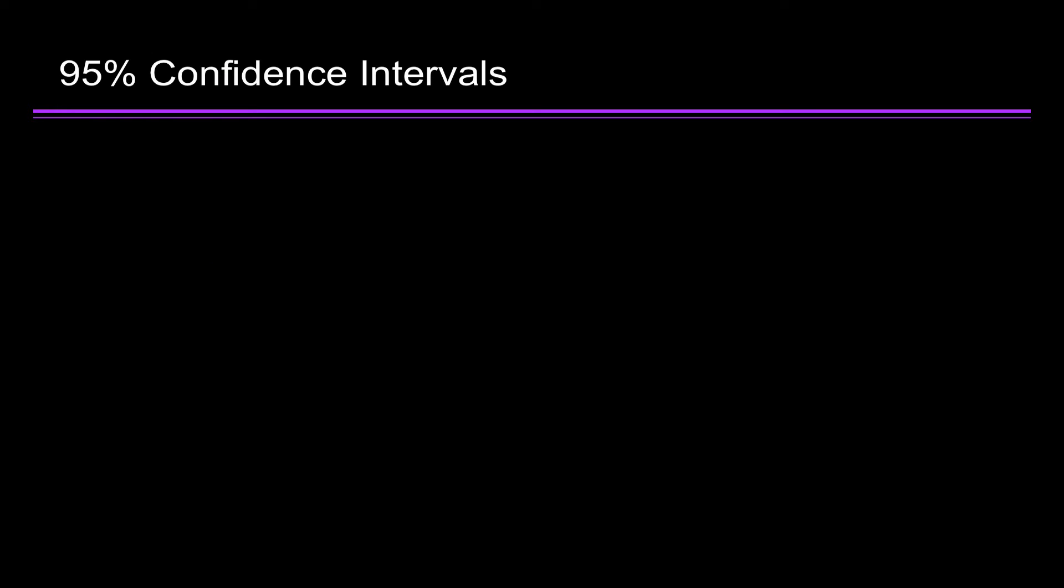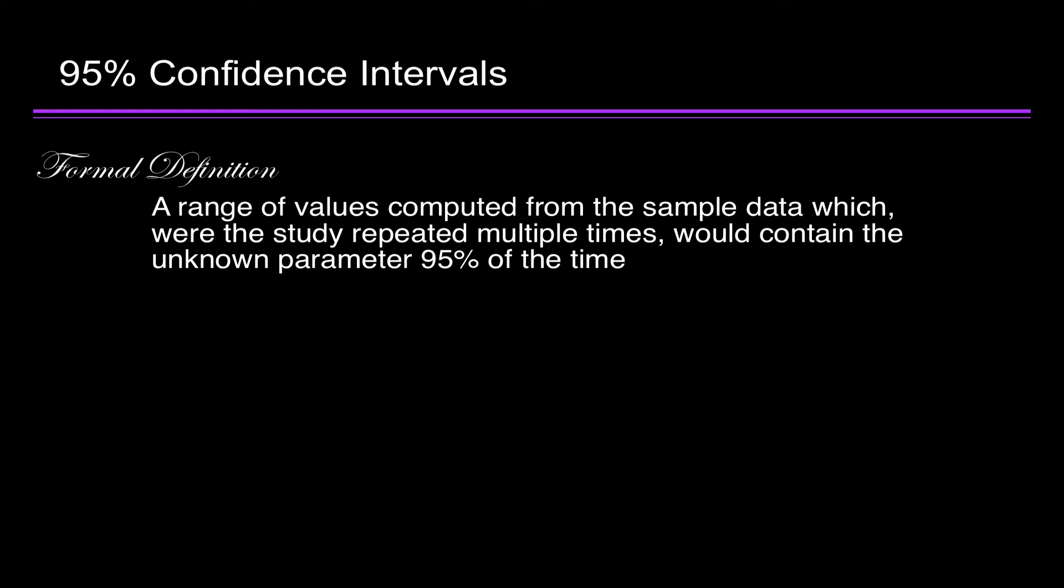So let's define the term 95% confidence interval. The formal definition is this: a range of values computed from the sample data which, where the study repeated multiple times, would contain the unknown parameter. That's what we're interested in 95% of the time.